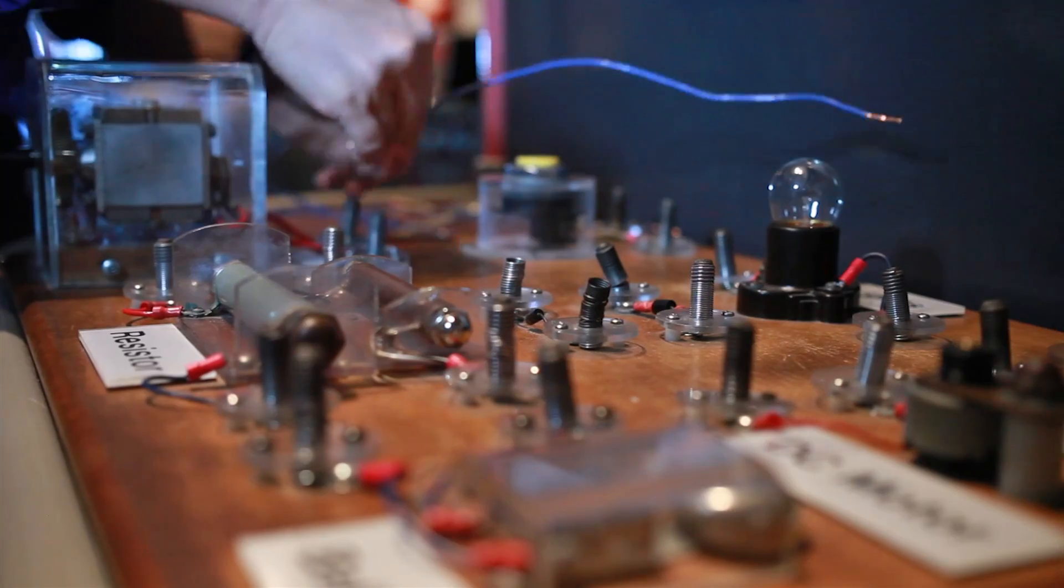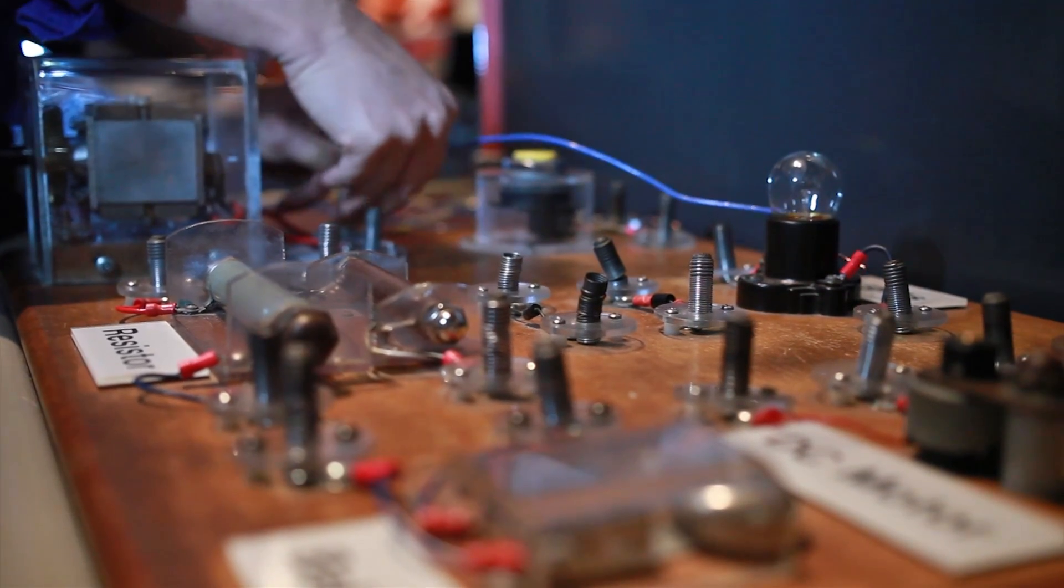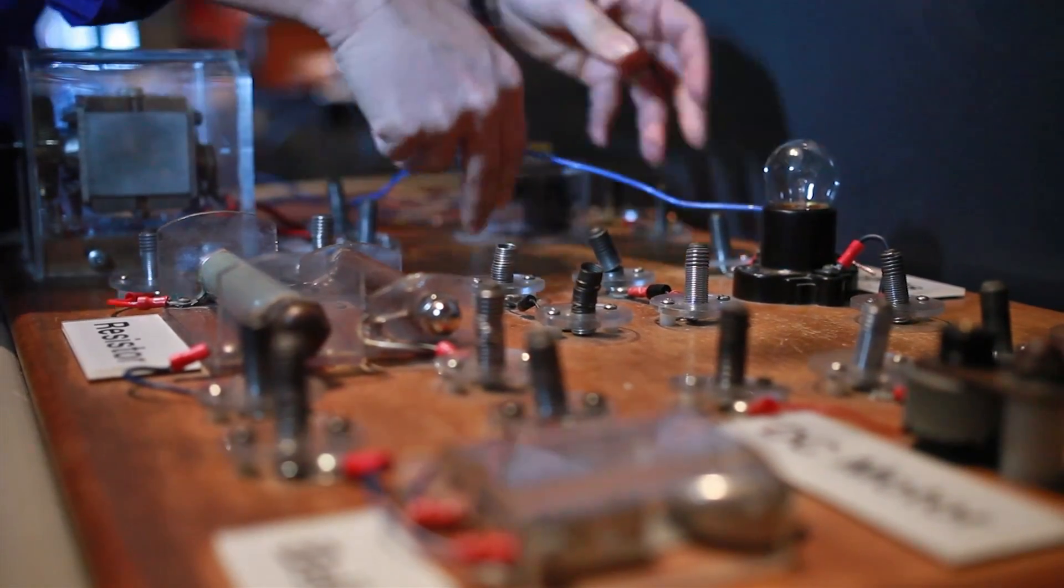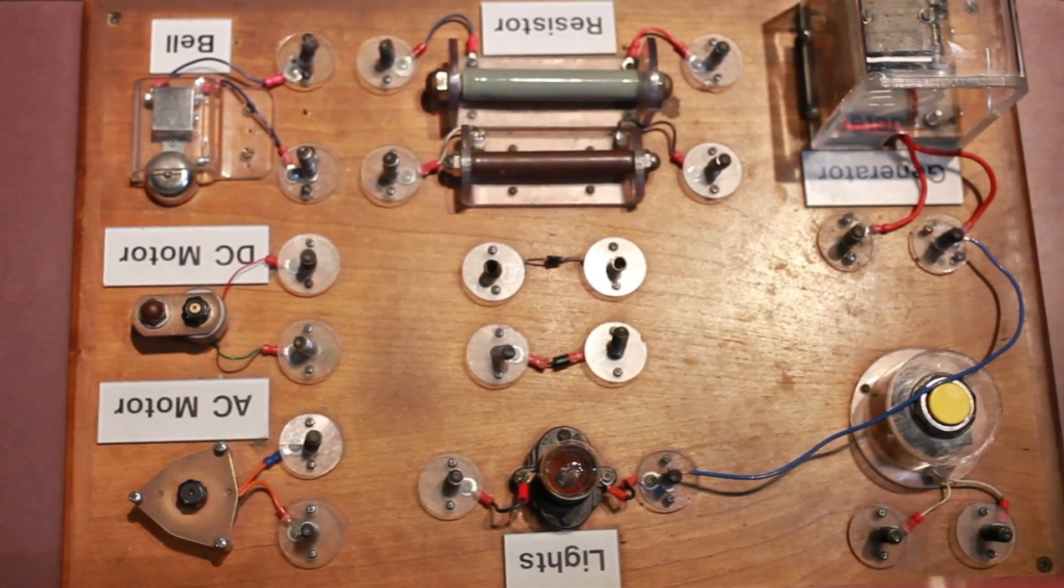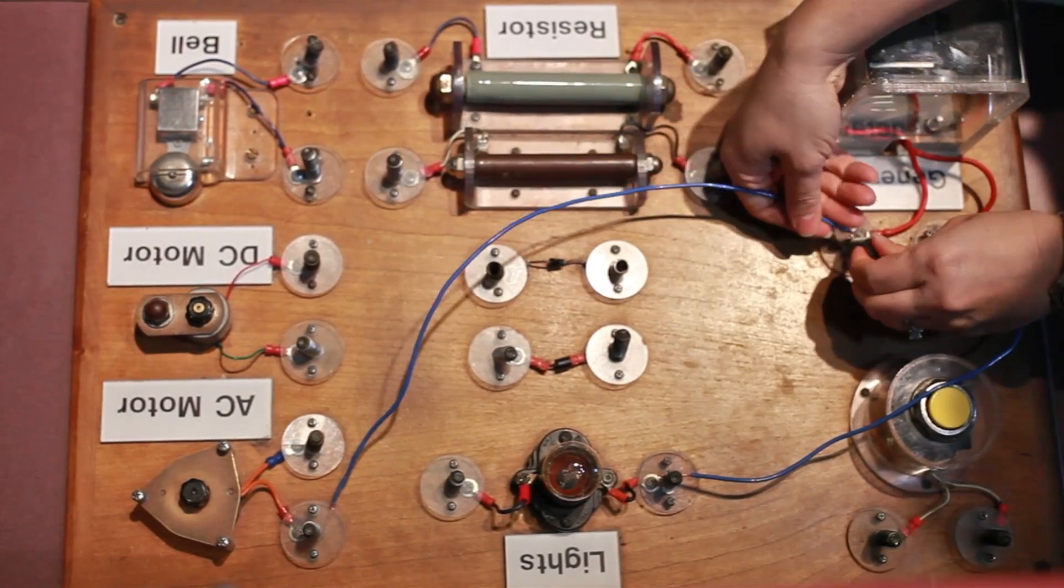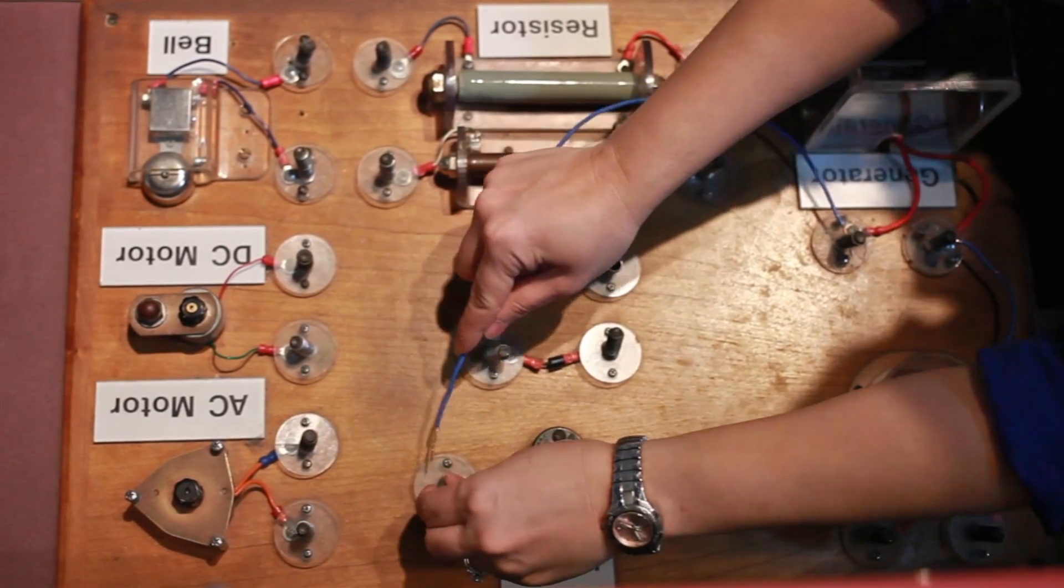By starting out with a very simple circuit, we can understand the basic functions of the components. In this simple circuit, a light will turn on when the wires are properly connected from the power source to the light, and then back to the power source.